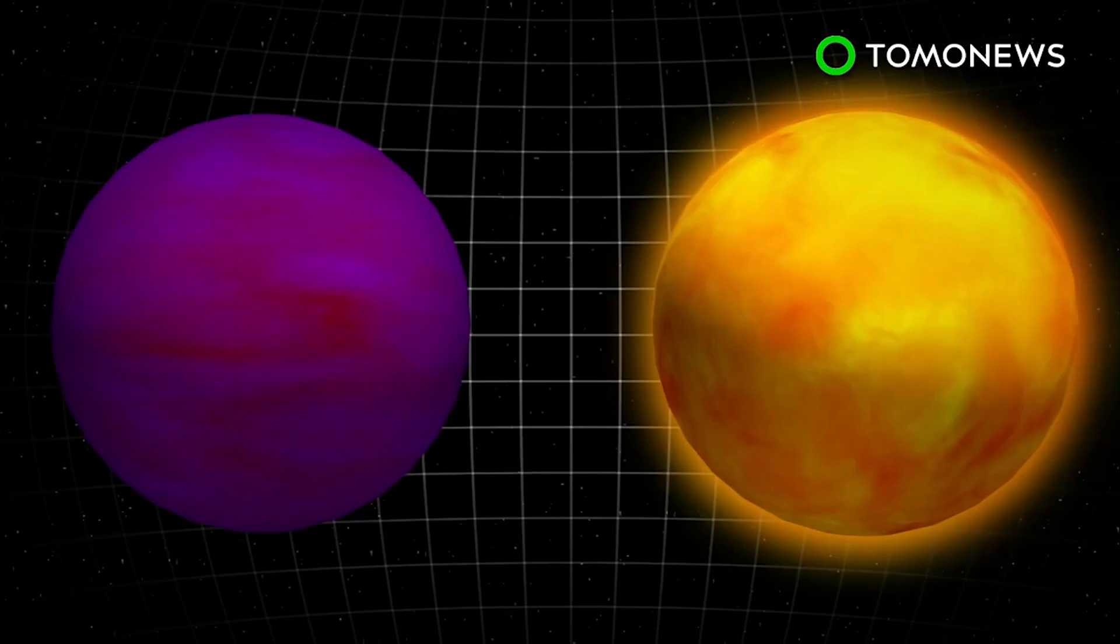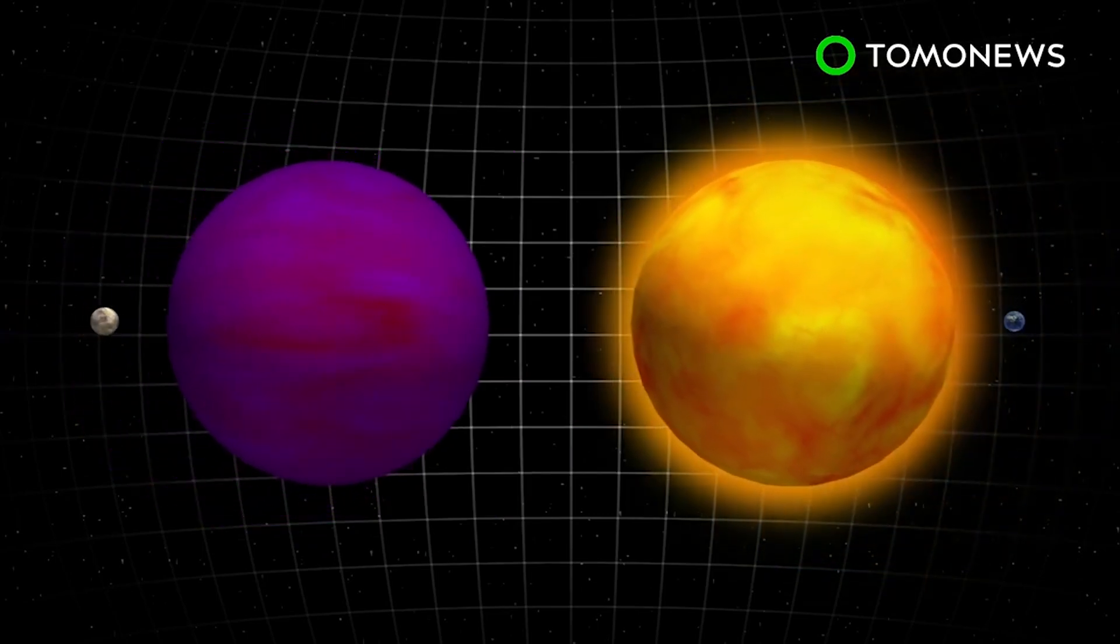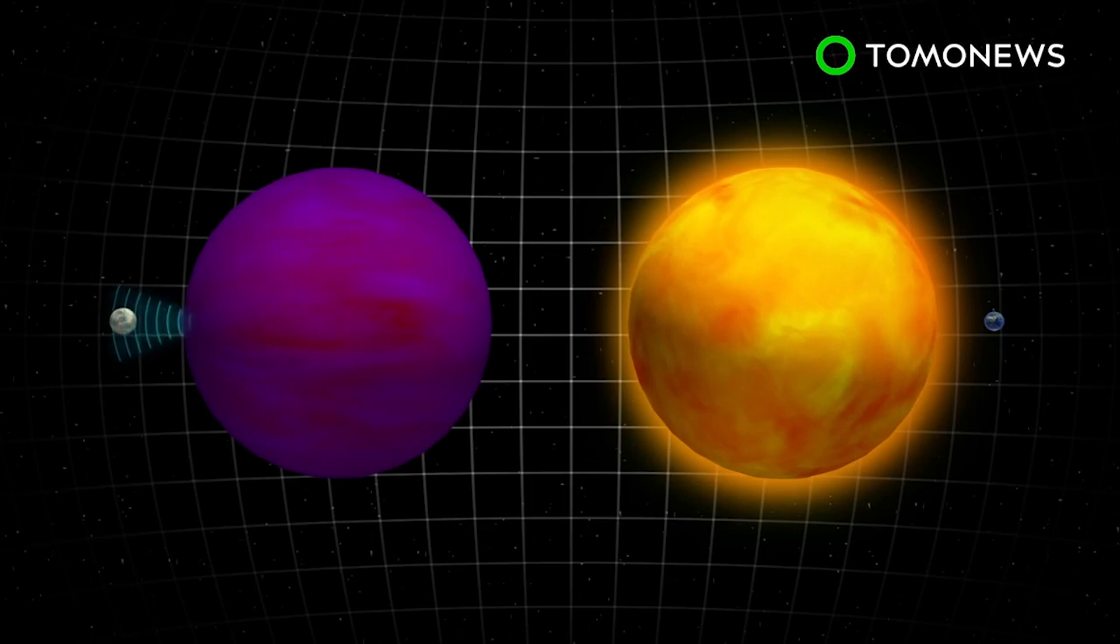This red dwarf star is much dimmer and cooler than our Sun, meaning the star's habitable zone is closer. However, its cosmic radiation could still damage the planet.